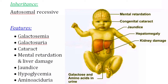Coming to amino aciduria, galactose-1-phosphate may get deposited in the renal tubules. When it deposits in the renal tubules, it damages those tubules, which leads to excretion of amino acids in the urine — that is called amino aciduria.